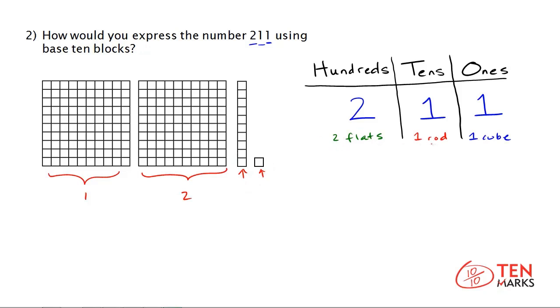So, you have two flats, one rod, one cube, or the number 211. Now, there's another way that you can show this using base ten blocks. If you think about the fact that you have 211, and 11 can be thought of as one ten and one one, or you can think of it as 11 ones.